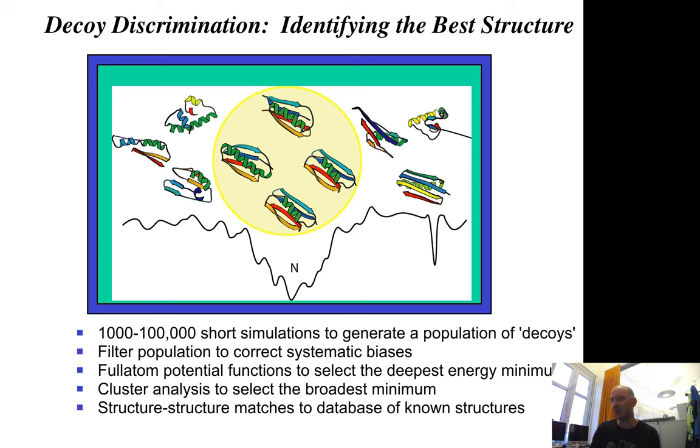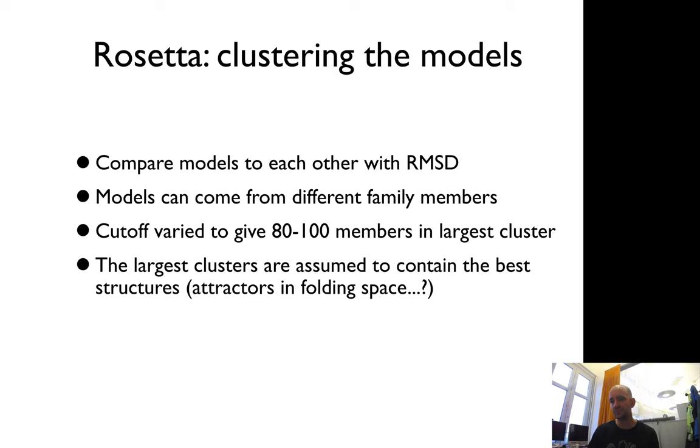Then you generate around thousands or even hundreds of thousands of models. You generate what you call decoys and you filter this to find low energy structures. What you do is clustering. You basically see if you have many simulations around the same structure and get the same answer, you're most likely correct. You compare and find a large cluster.